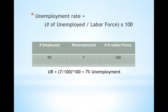The unemployment rate equals the number of unemployed divided by the labor force times 100. As an example, if there are 100 people in the labor force, 93 are employed and 7 are unemployed, the unemployment rate will be 7%.